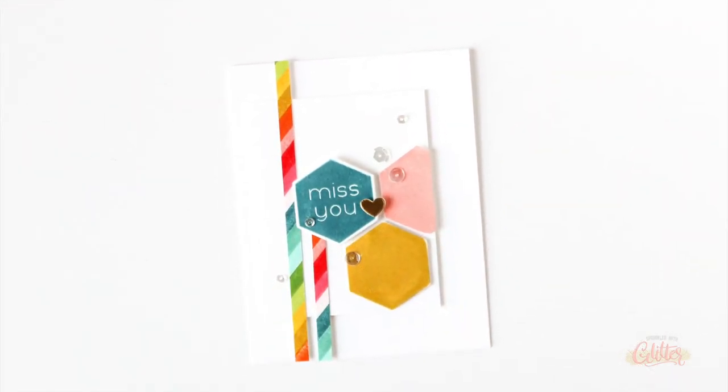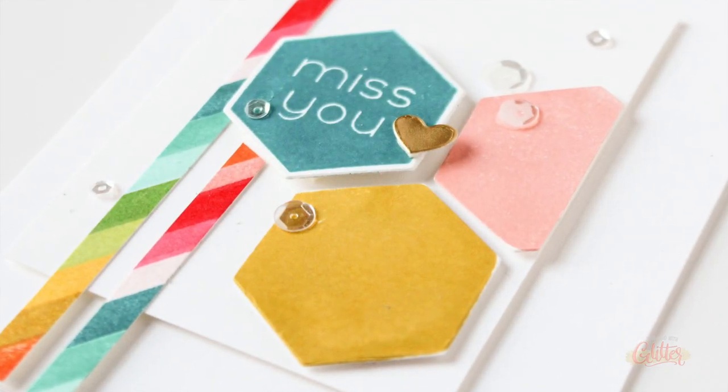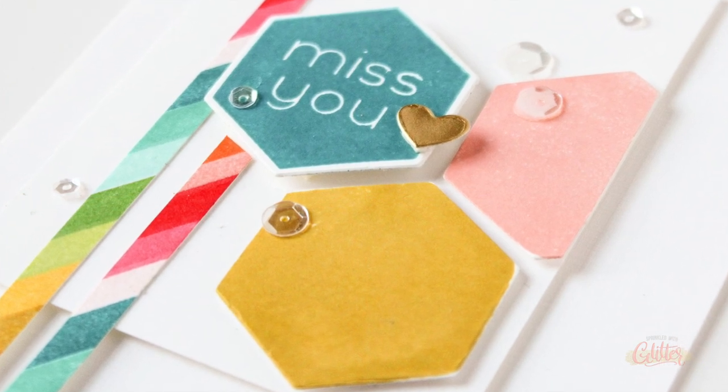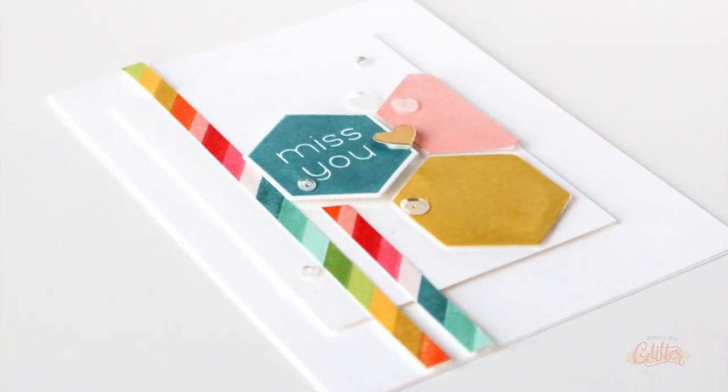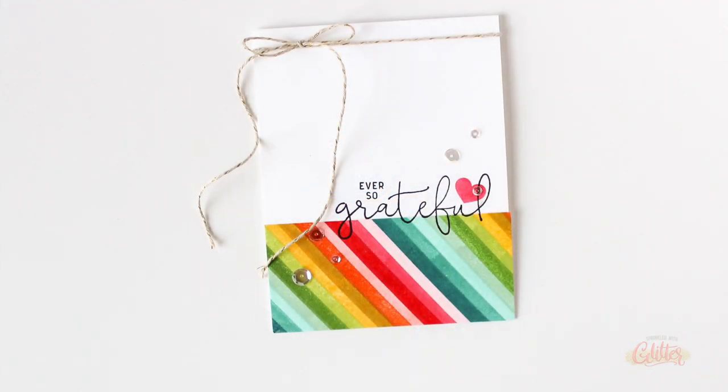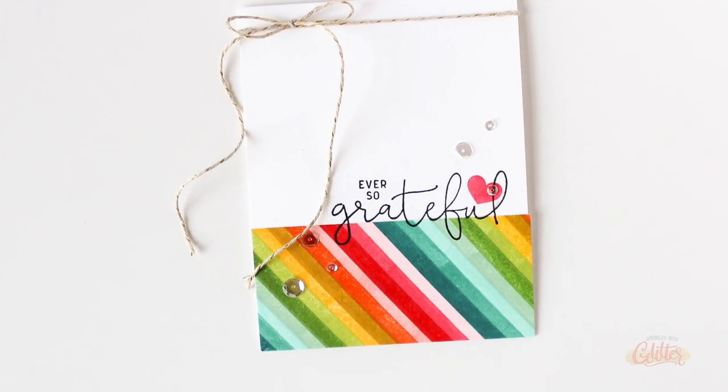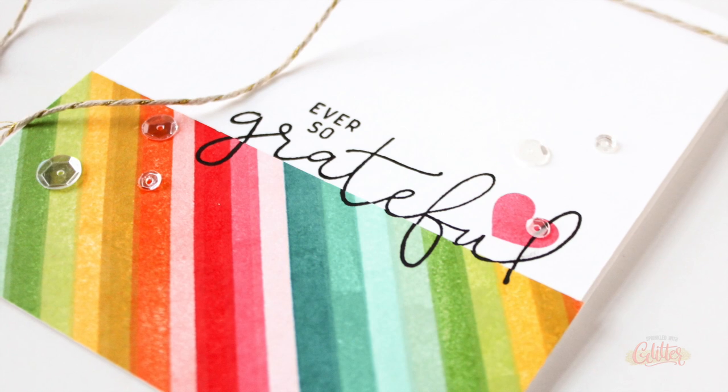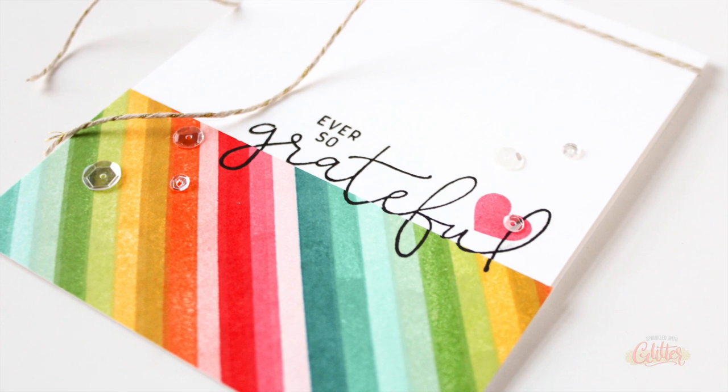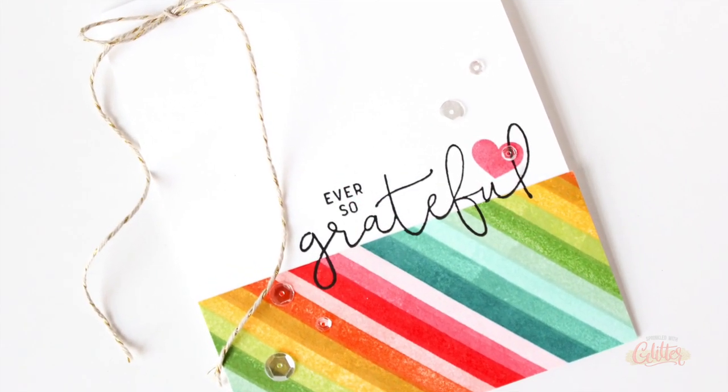So there you have it, a couple of easy ways to make your own rainbow stripe pattern paper. I absolutely love the way these Concord & Ninth colors just work together. I'm left with these really beautiful pieces of rainbow striped pattern paper that I can use in various ways on several card projects, and I have a lot of this paper left over just from those few little bits that I created. There will be more rainbow cards in my future.